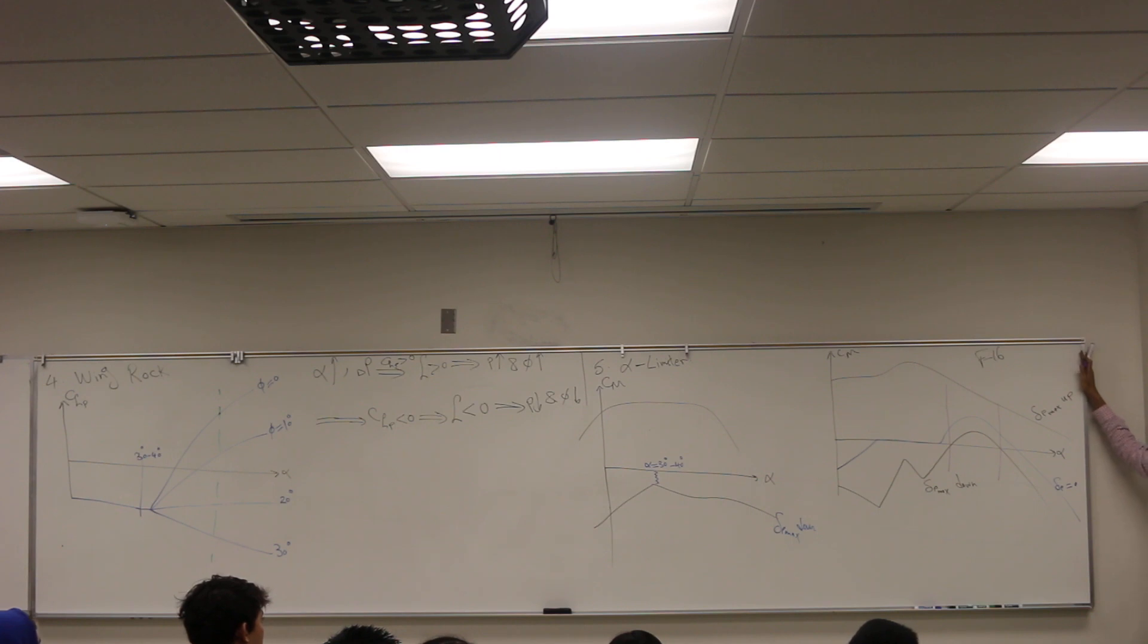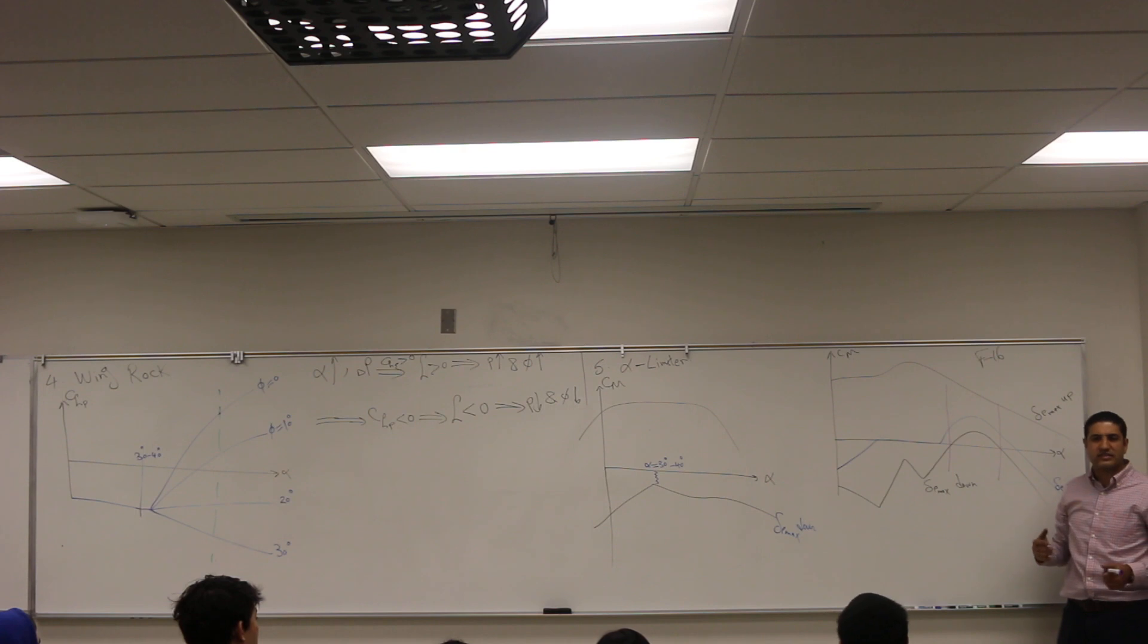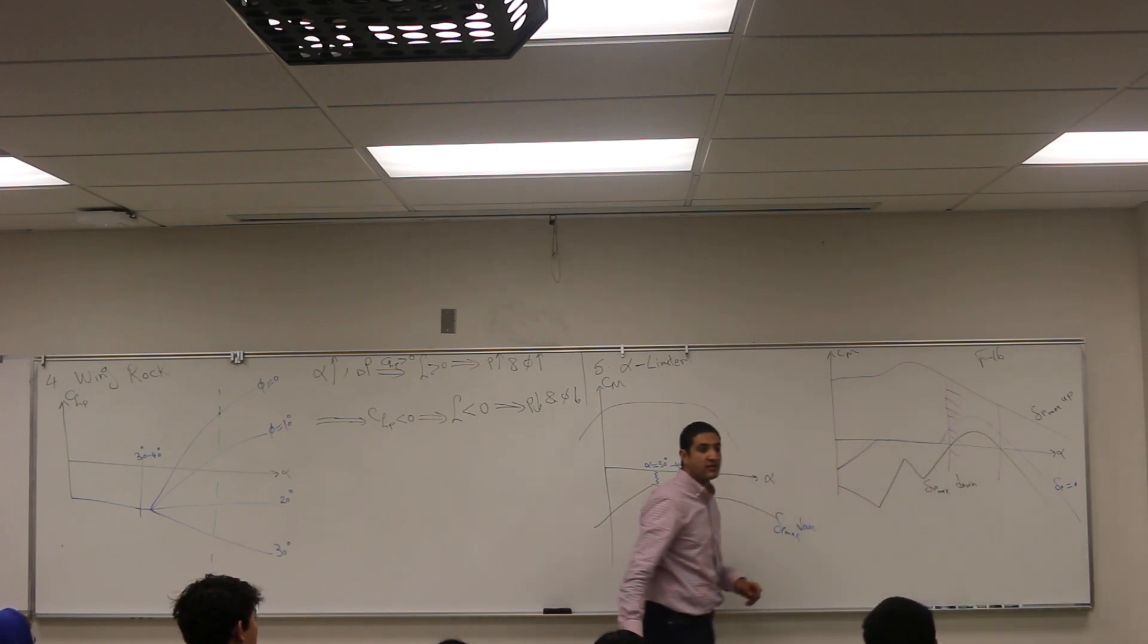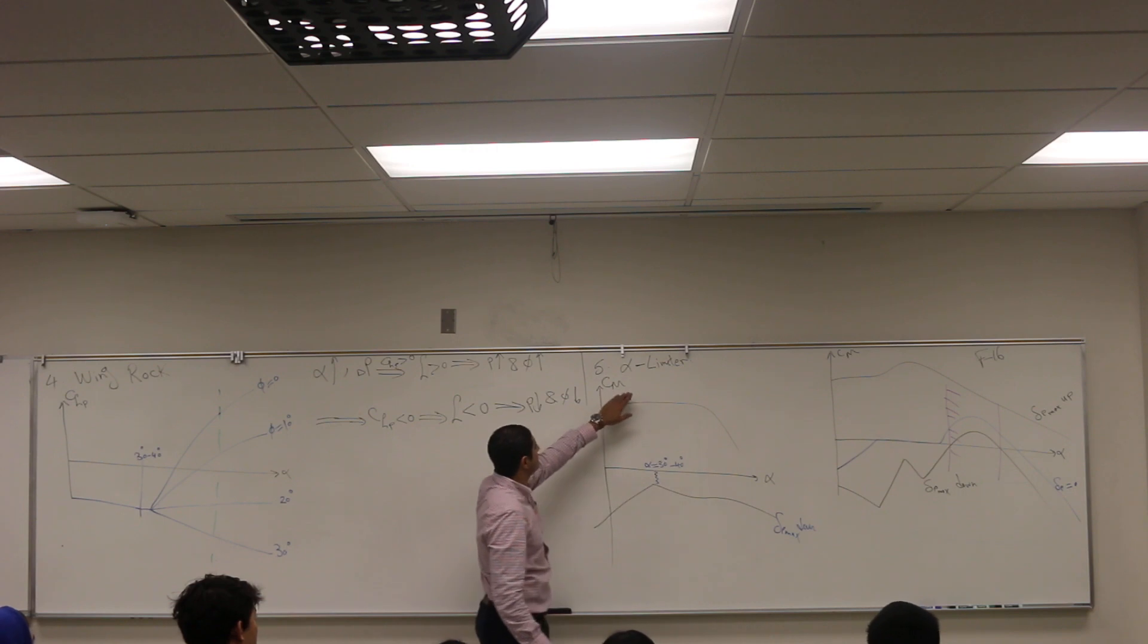So what goes wrong here? On this page you cannot achieve negative pitching moment whatsoever, right? I cannot achieve negative pitching moment at all. What does it imply? It simply implies that they cannot fly here. So this envelope is forbidden for an F-16.